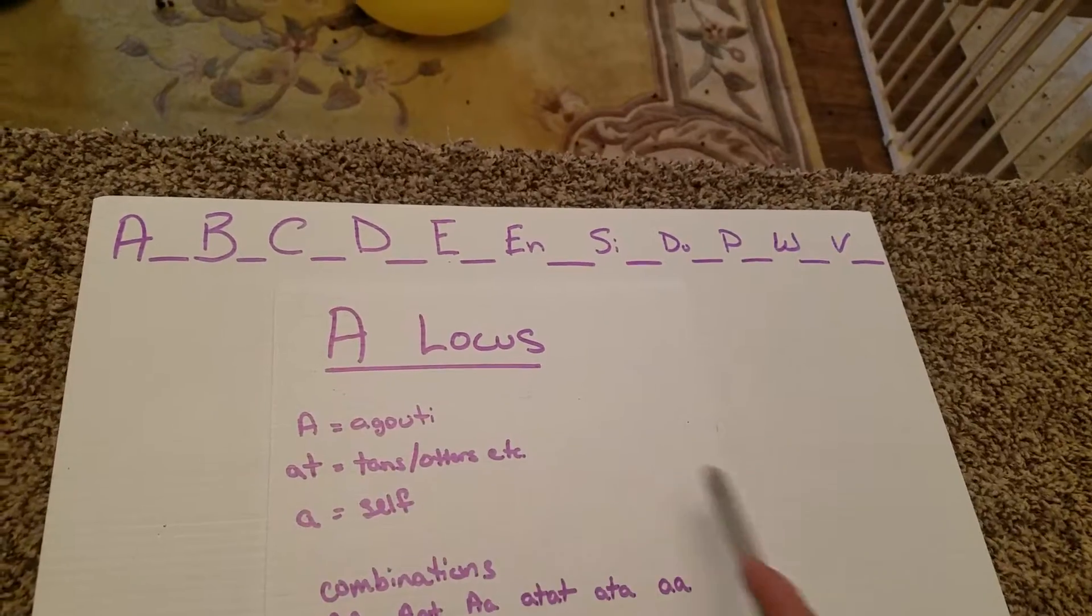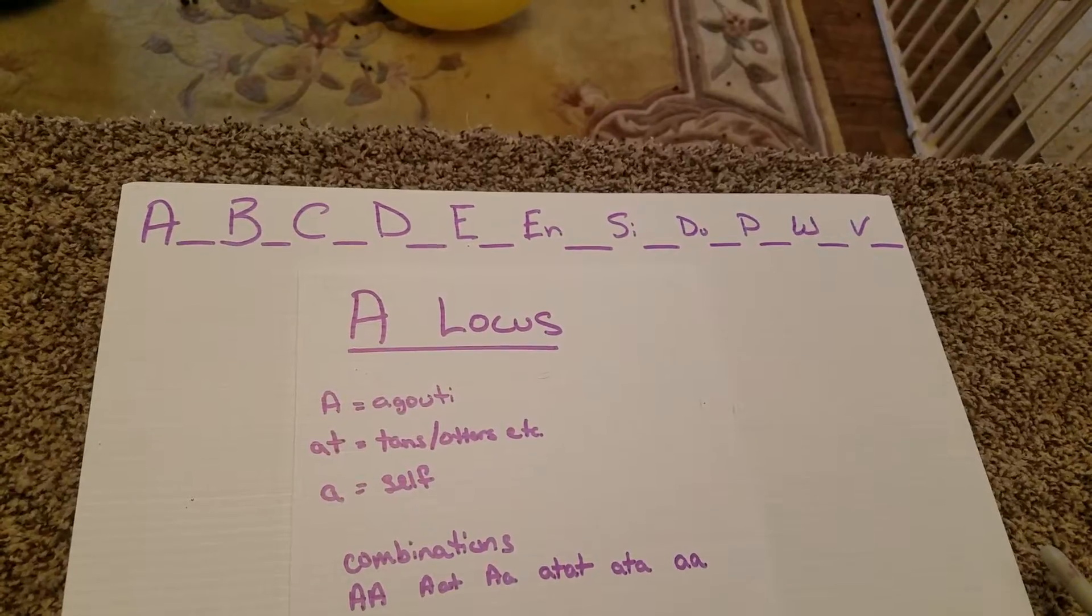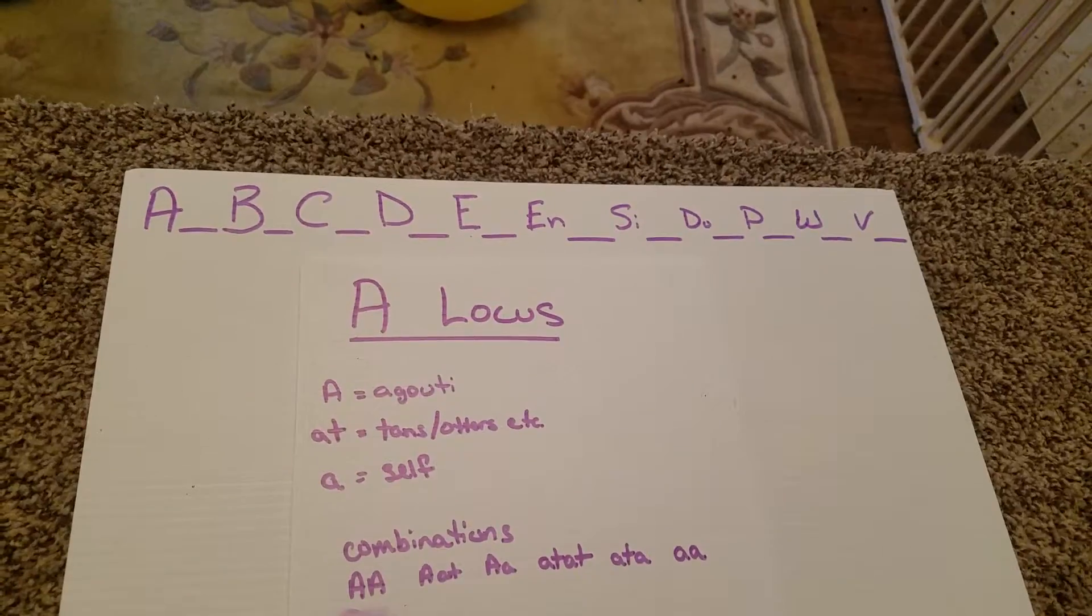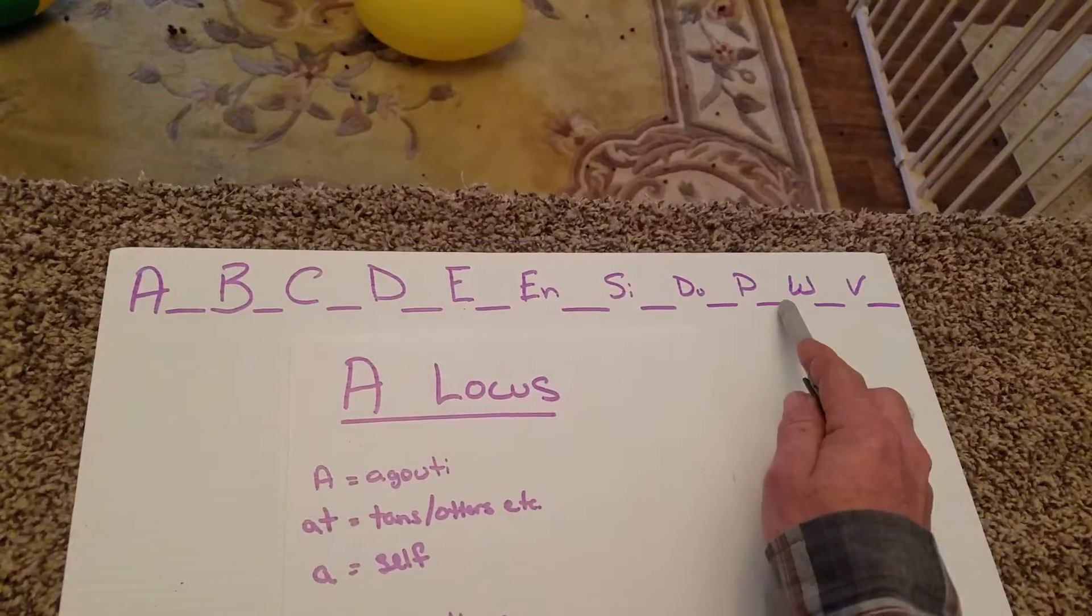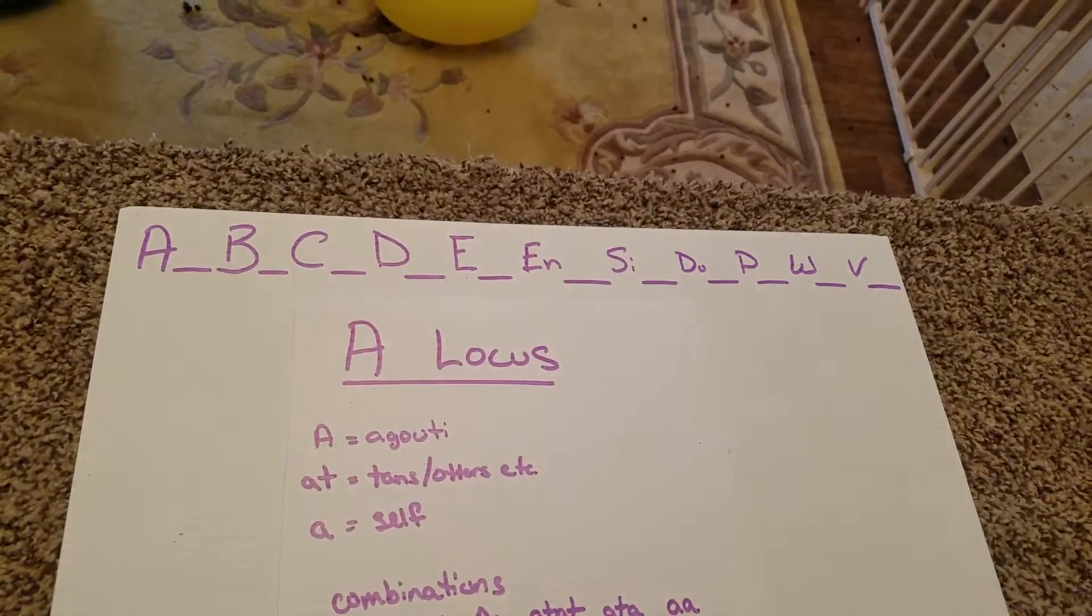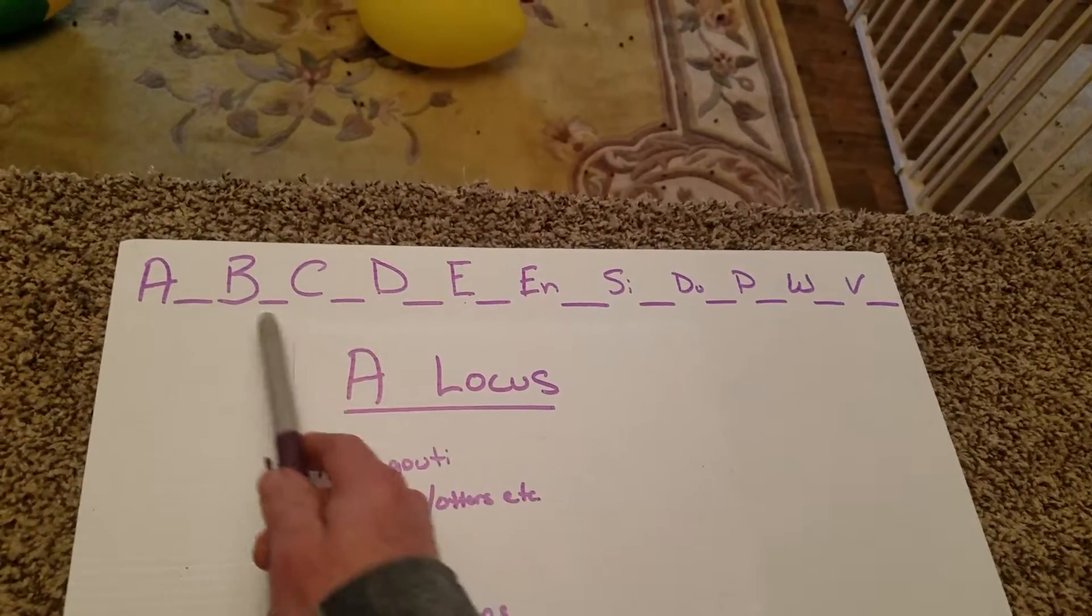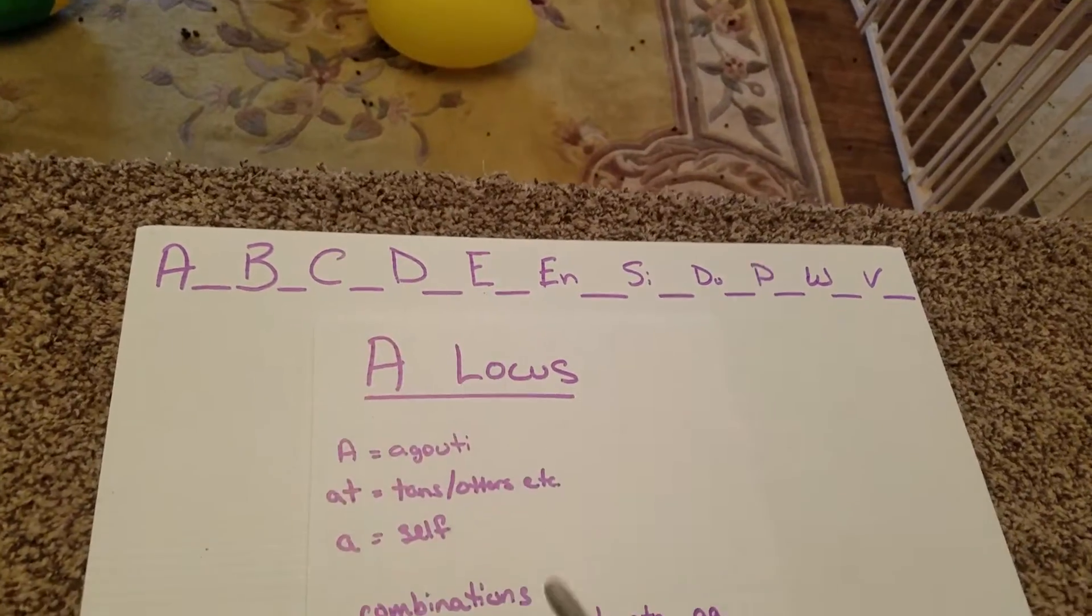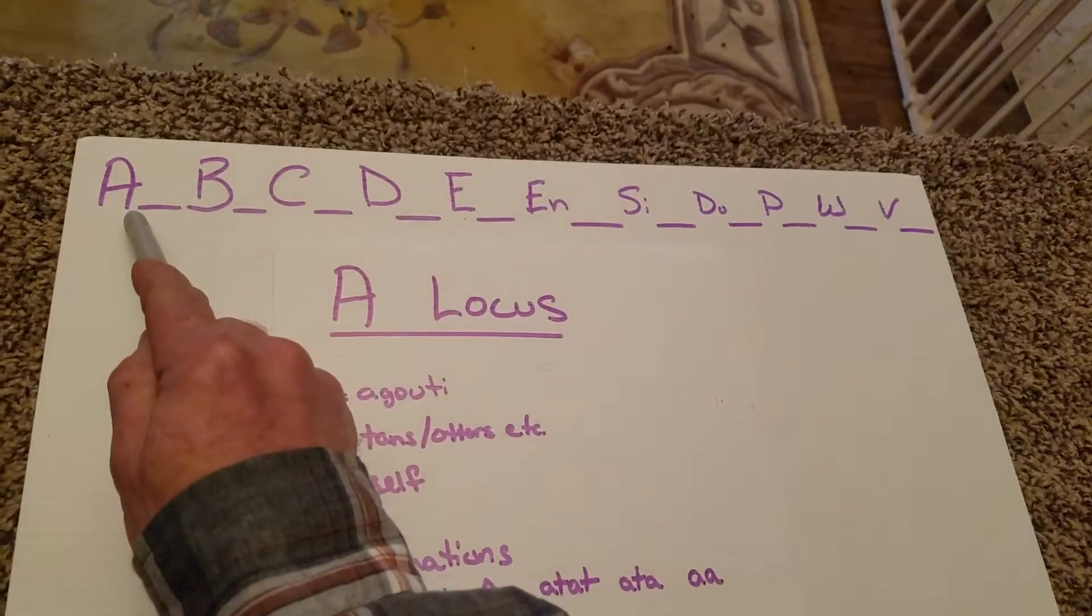Otters in the tan section is going to have different markings and spread of color. Selfs are going to be just a little bit different versus the agoutis. You can have, as we talked earlier, two genes that go with each locus point. And the A is the same as everything else. You can have up to two genes that will fit in here. That's what this little space for me, this is the recessive one. So when we talk about the number of combinations you can get at A.